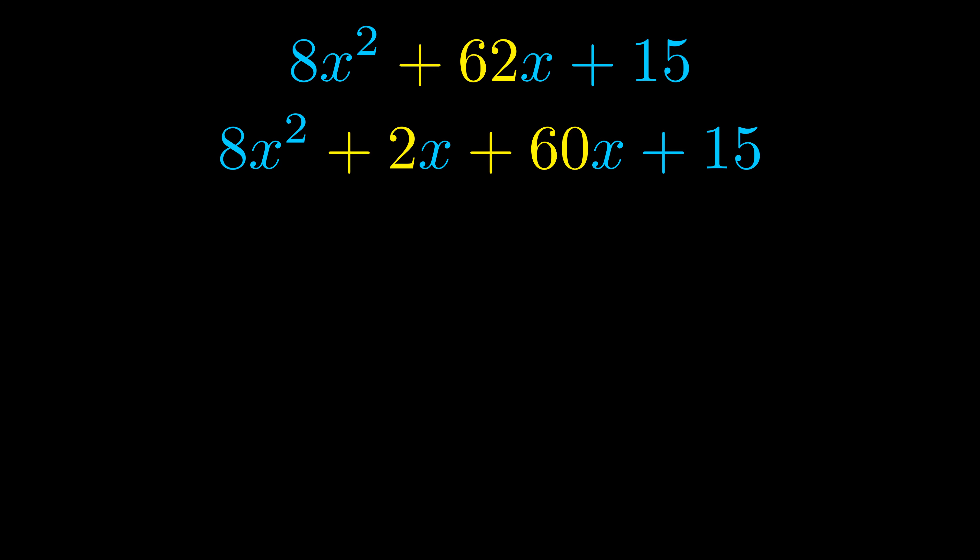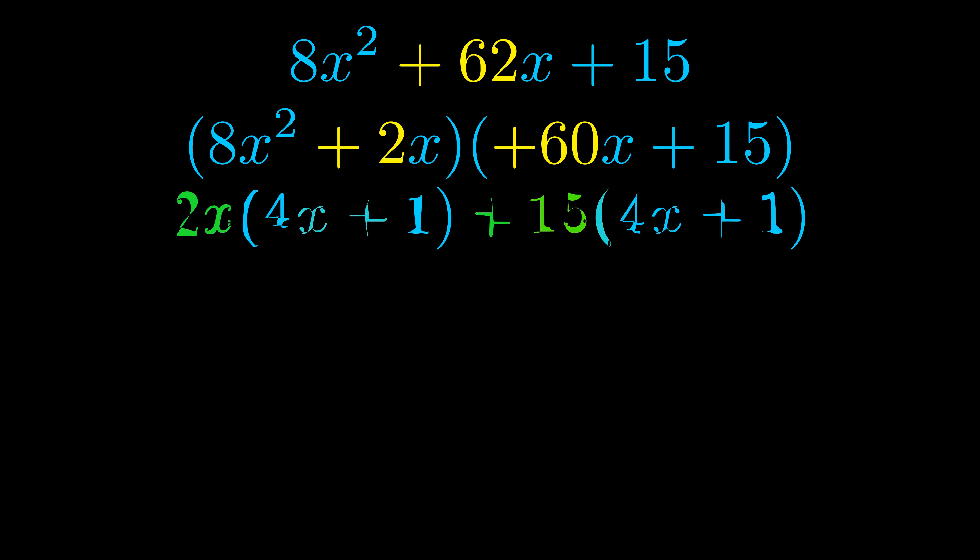Once we've done this, we go ahead and put parentheses around the first term and the last term, and we do that so that we can take the greatest common factor out of both terms. We can see the greatest common factor is now outside in green.